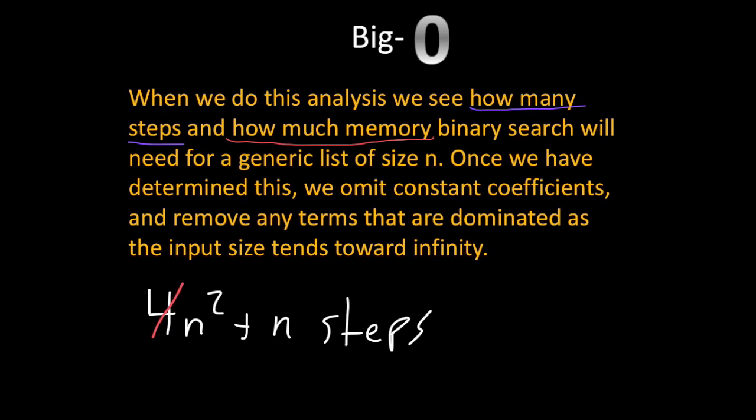And we remove any terms that are dominated as we plug in larger and larger values for n. So here we have two terms we have a quadratic term here and we have a linear term. And if we look at a graph of the quadratic versus the linear, n squared is going to get bigger much faster than n.